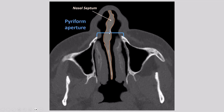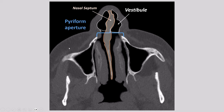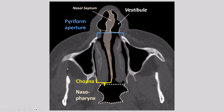There is an opening called the piriform aperture, which is basically the opening from the nose to the nasal cavity. The part of the nose filled with air on both sides of the nostrils is called the vestibule. So the piriform aperture is the opening from the vestibule to the proper nasal cavity. We also have a posterior border formed by the choana, which is basically the passageway from the nasal cavity — the inferior part with the inferior nasal turbinates — to the nasopharynx located immediately posteriorly.